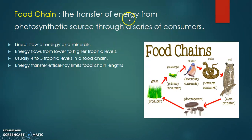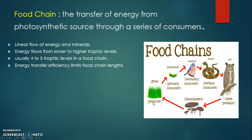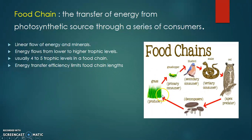The Food Chain is a transfer of energy from a photosynthetic source through a series of consumers. As you can see in this diagram, there are many creatures. There will be transfer of energy from the photosynthetic source — green plants, producers, or autotrophs. Starting from green grass as the photosynthetic source, then grasshopper as the primary consumer, followed by secondary consumers, tertiary consumers, top consumers, and then decomposers. Finally, they also help in the formation of green plants.